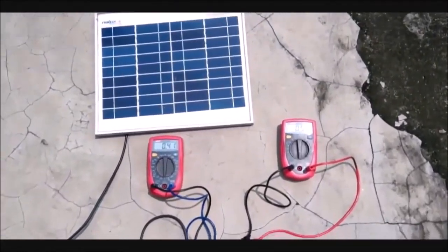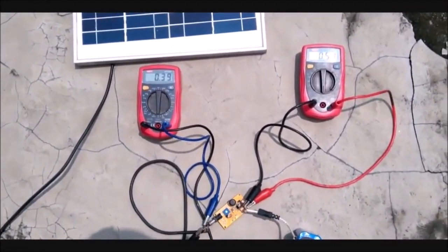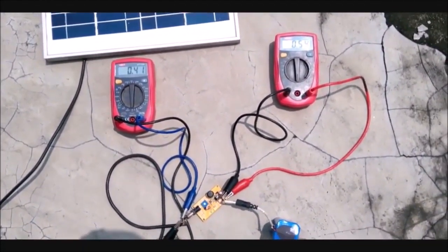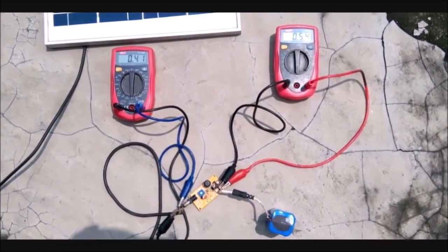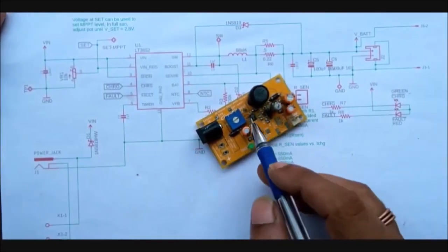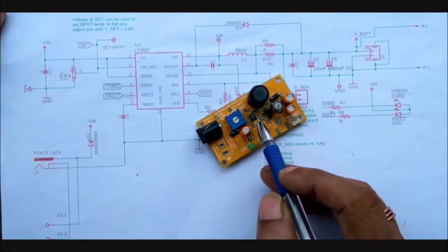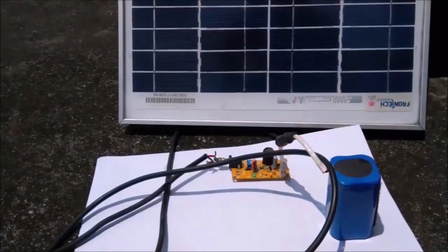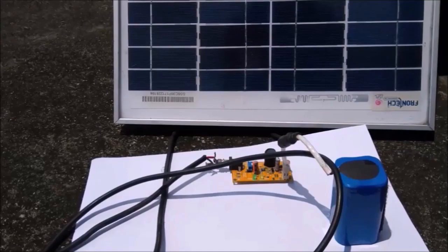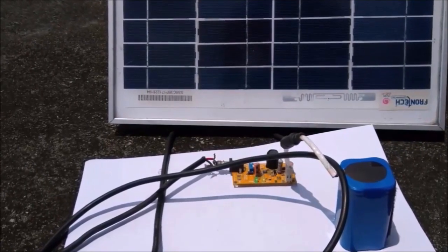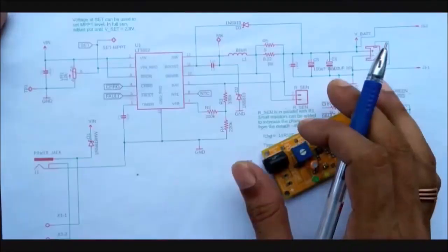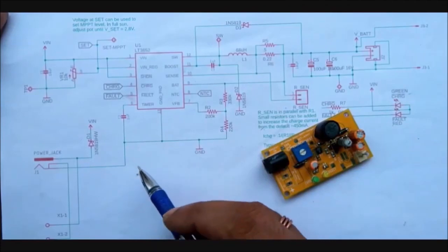So what it does is that it monitors the solar panel output voltage and based on that it controls the output voltage and current to charge the battery. This particular MPPT charge controller here is based on the LT3562 solar battery charger IC and we have designed it to charge a 2P2S lithium battery with a charging current of 600 milliamps. We will discuss how the entire circuit works and also test the circuit in real time.